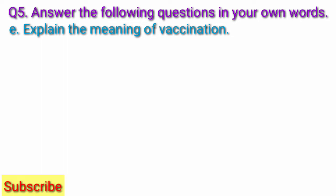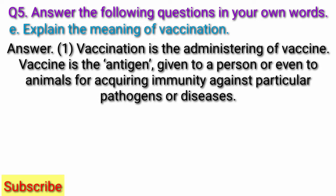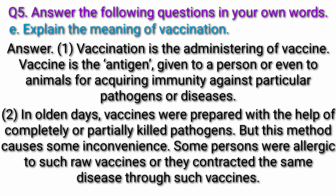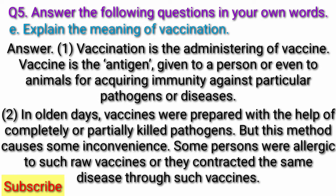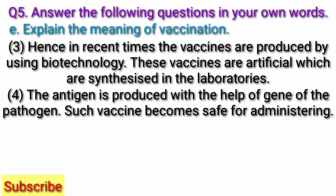Next question: Explain the meaning of vaccination. Answer: Vaccination is the administering of a vaccine. A vaccine is the antigen given to a person or even to animals for acquiring immunity against particular pathogens or diseases. In olden days, vaccines were prepared with the help of completely or partially killed pathogens, but this method caused some inconvenience. Some persons were allergic to such raw vaccines or they contracted the same disease through such vaccines. Hence, in recent times, vaccines are produced by using biotechnology, and are synthesized artificially in laboratories.